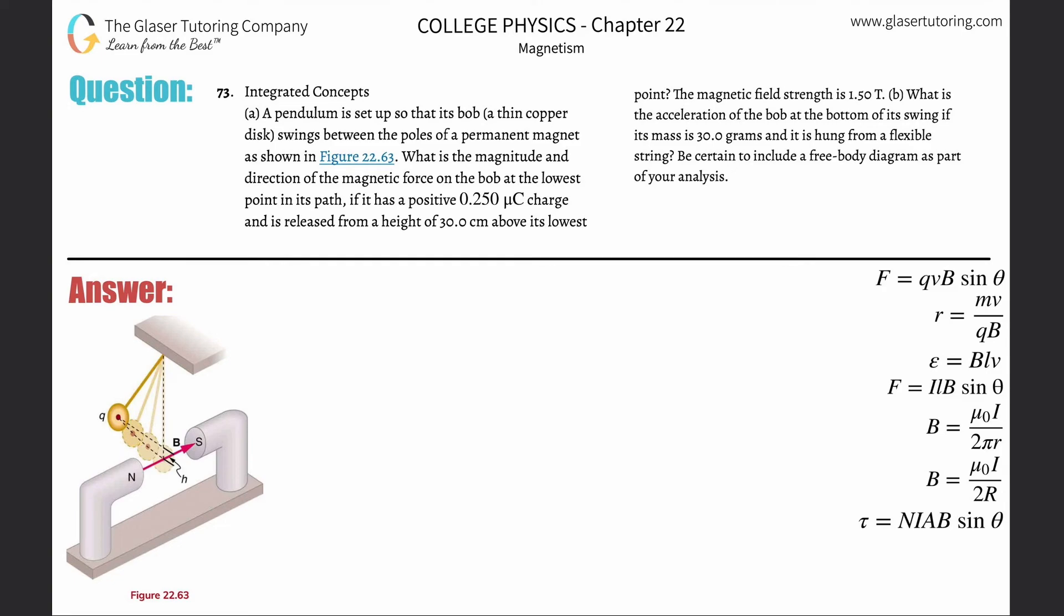Number 73, integrated concepts, letter A. A pendulum is set up so that its bob, a thin copper disc, swings between the poles of a permanent magnet as shown in figure 22.63. What is the magnitude and direction of the magnetic force on the bob at the lowest point in its path if it has a positive 0.25 micro coulomb charge and is released from a height of 30 centimeters above its lowest point? Magnetic field strength here is 1.5 Tesla.